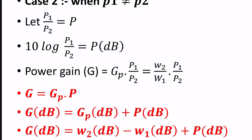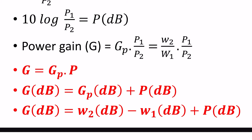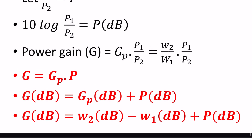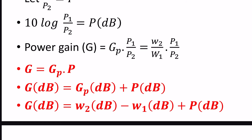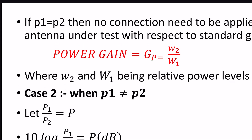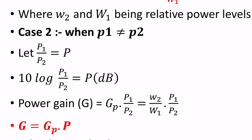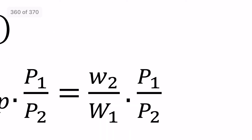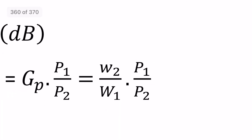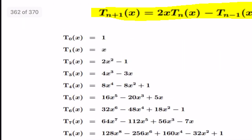The power ratio is W2 by W1. The power gain G_P multiplied by P gives the equation. In decibels: G_P in dB equals W2 minus W1 plus P in dB. The attenuator values W1 and W2 are recorded for the standard and test antenna respectively, and their difference gives the gain. That is the measurement mechanism.